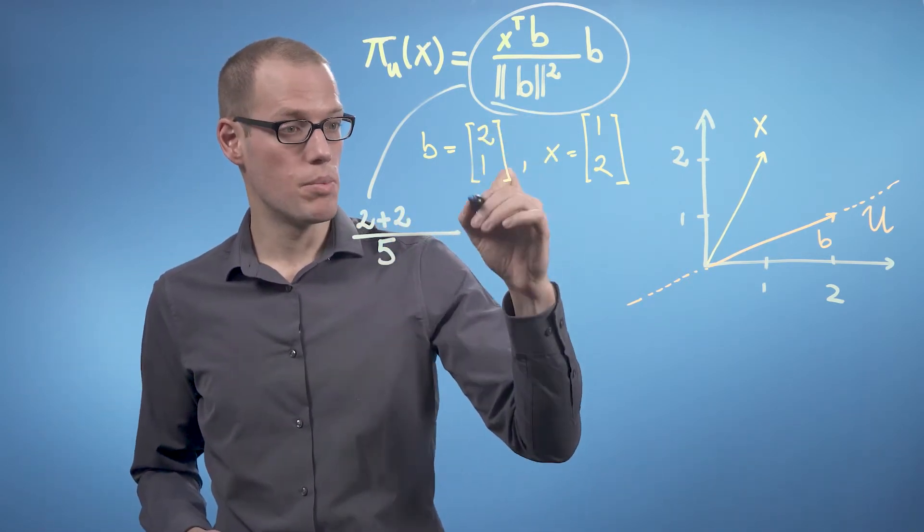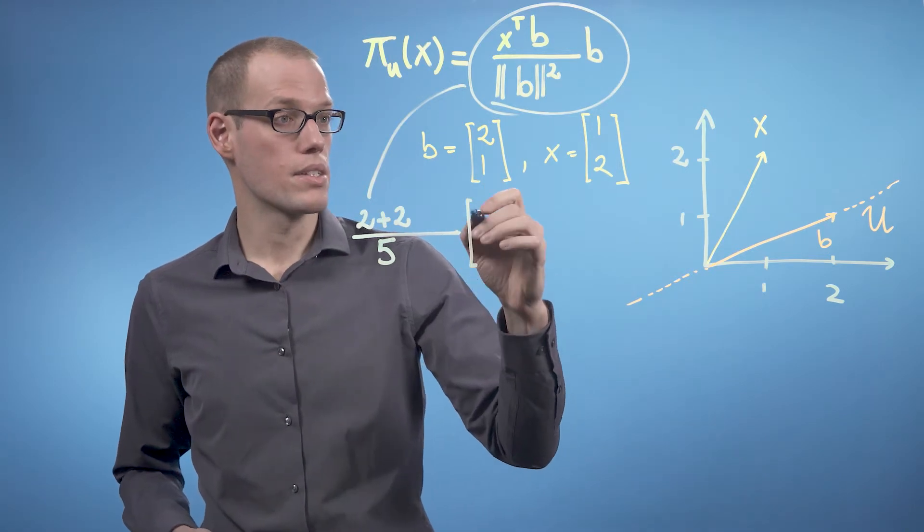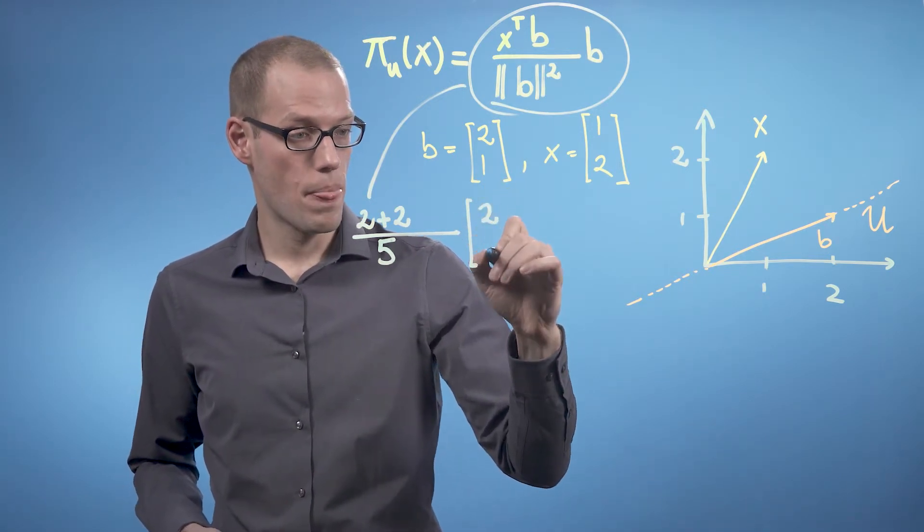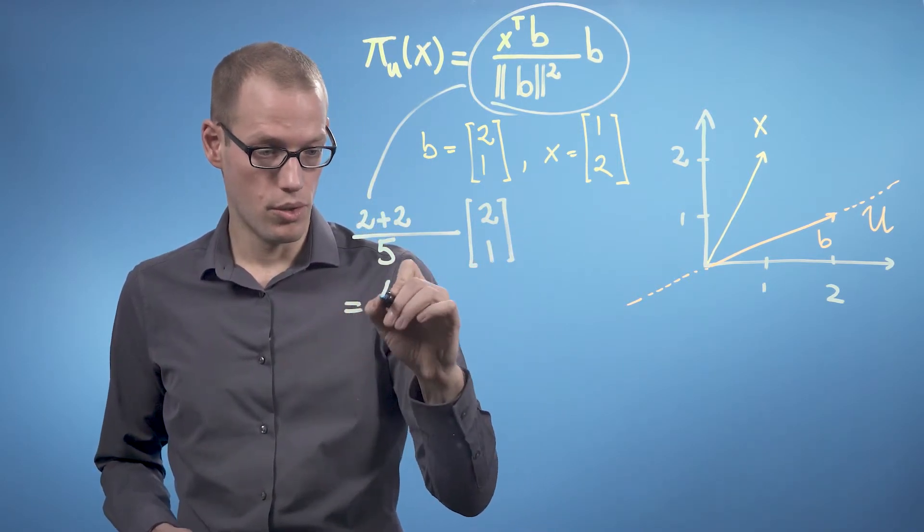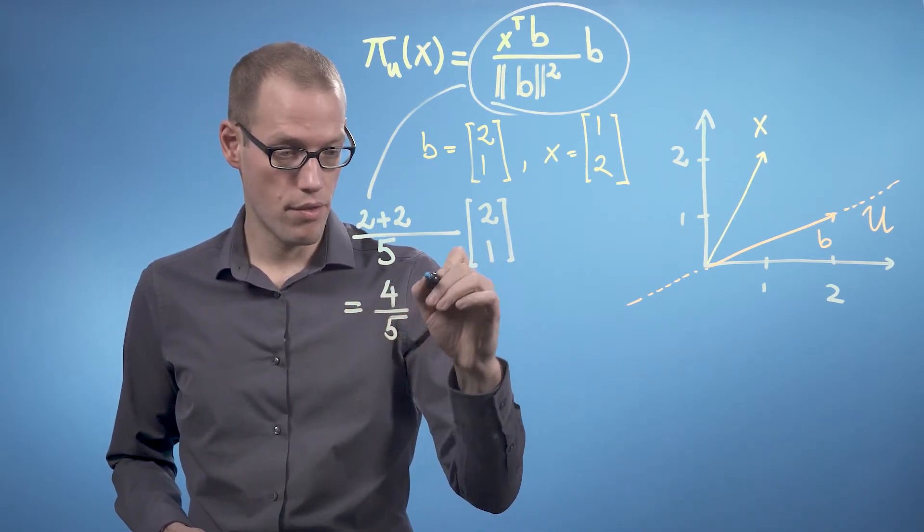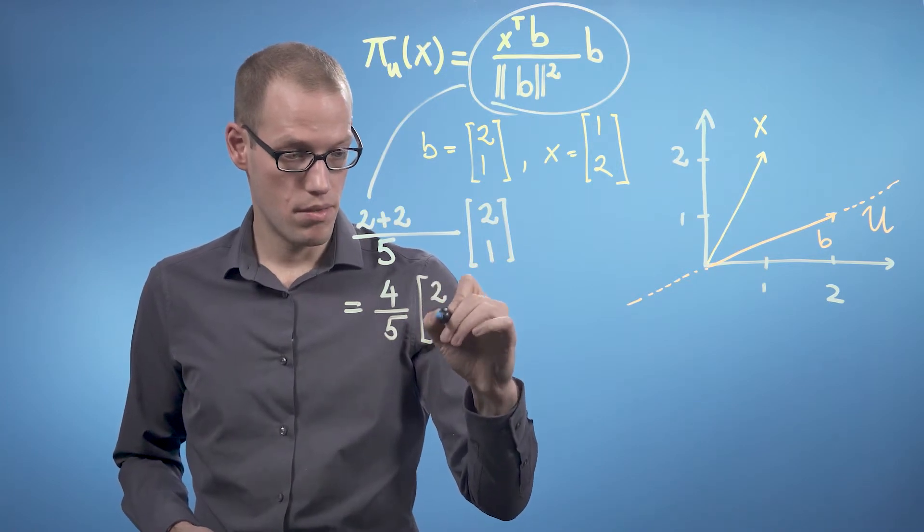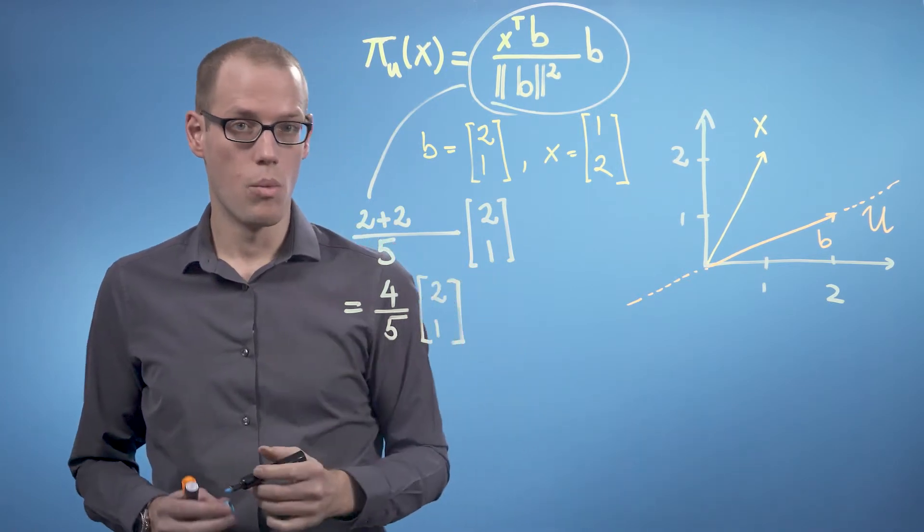And then times b will get us to [2, 1]. So overall, 4 over 5 times the vector [2, 1].